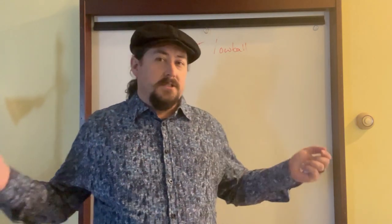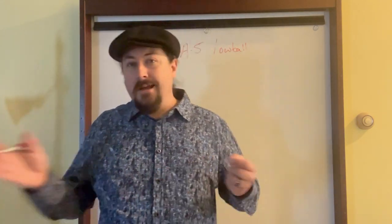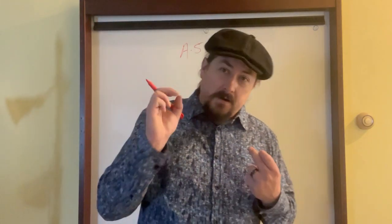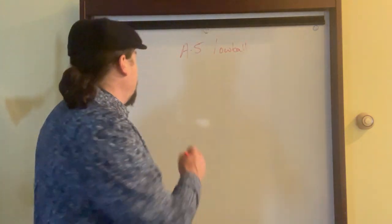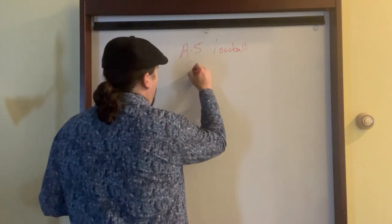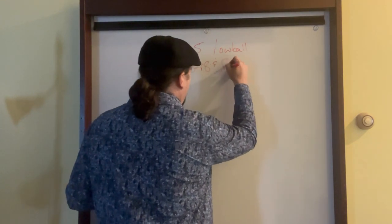Now I know what some of you are saying: Professor, professor, is ace to five lowball the same as deuce to seven, just instead of seven five being the nuts, the wheel is the nuts? I mean, if you want to break it down to very simple brass tacks, sure. But the strategy is different, and the reason why, particularly on ace to five lowball, is because straights and flushes don't matter.